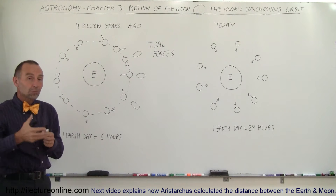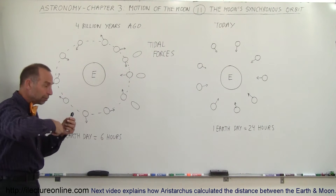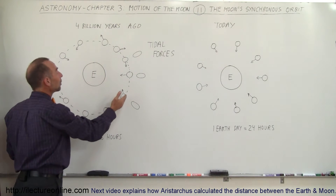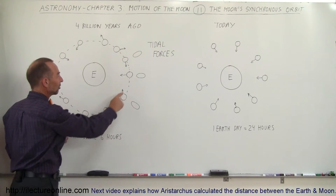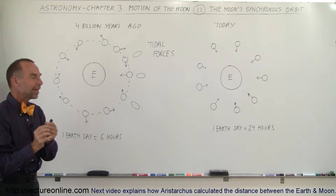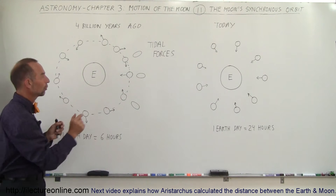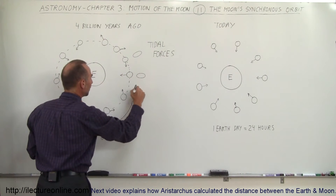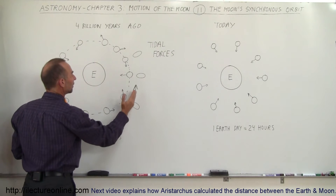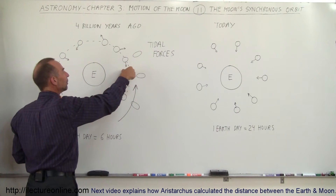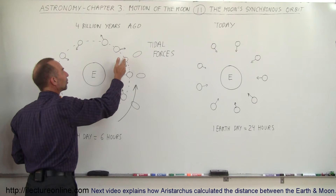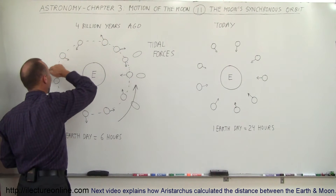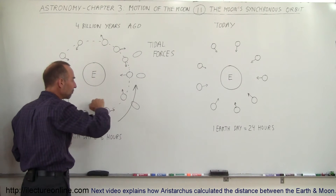The Moon would also be rotating on its axis, and the speed at which it rotated would have been greater than the time it takes for the Moon to make one trip around the Earth. Those little arrows here represent a particular point on the Moon's surface. As the Moon orbits in this direction, you can see that the Moon rotates faster, so that same point keeps going around and around as the Moon revolves around the Earth.